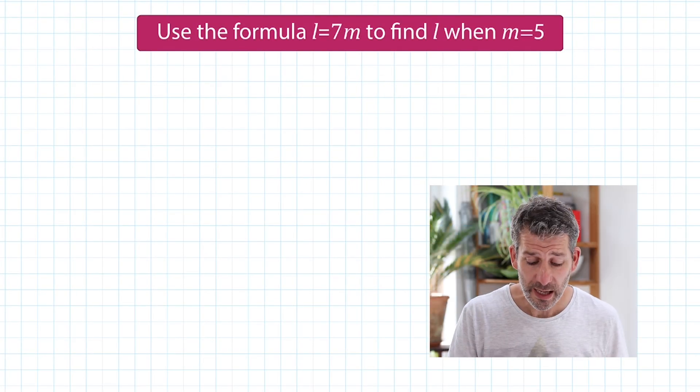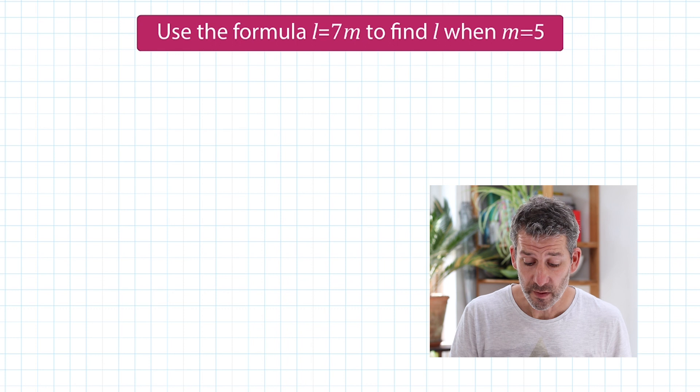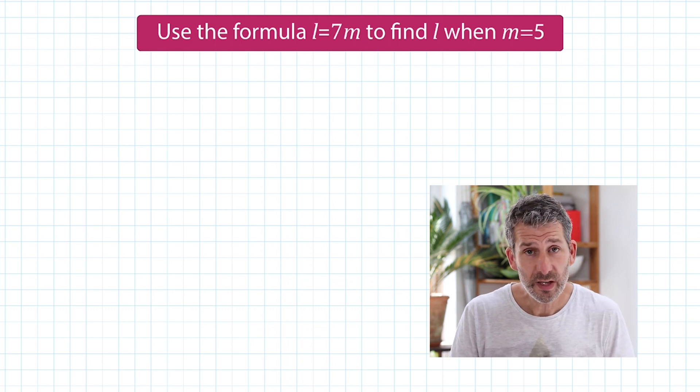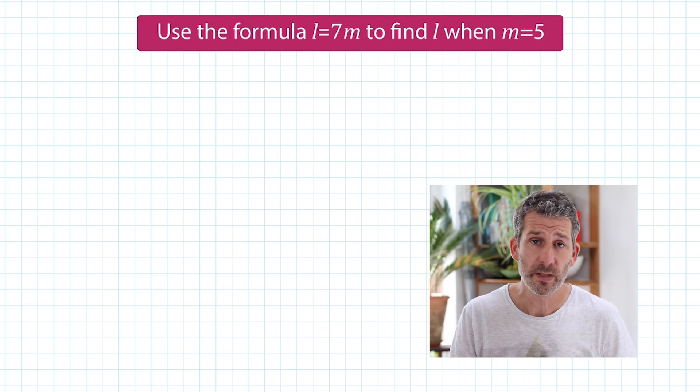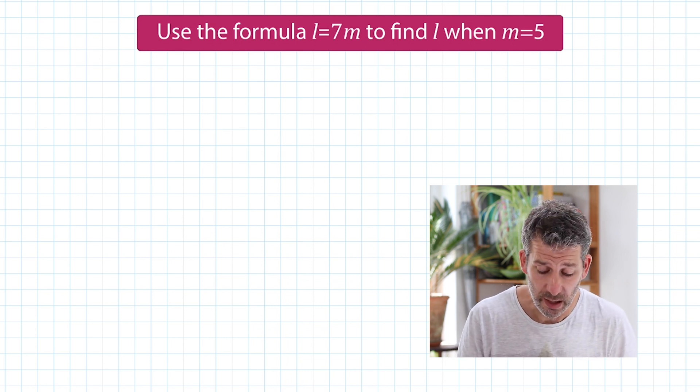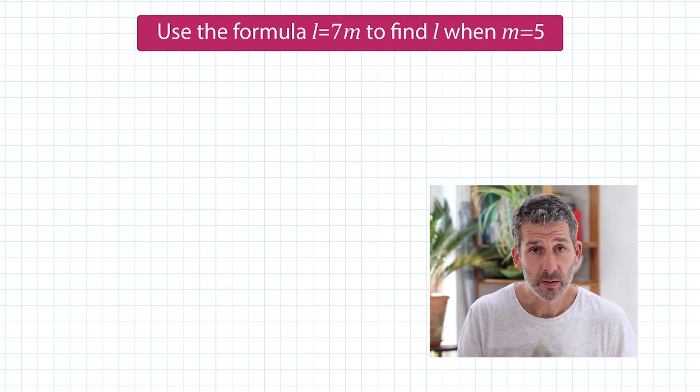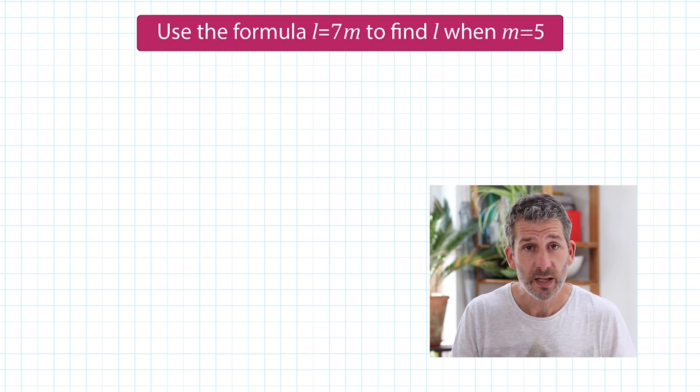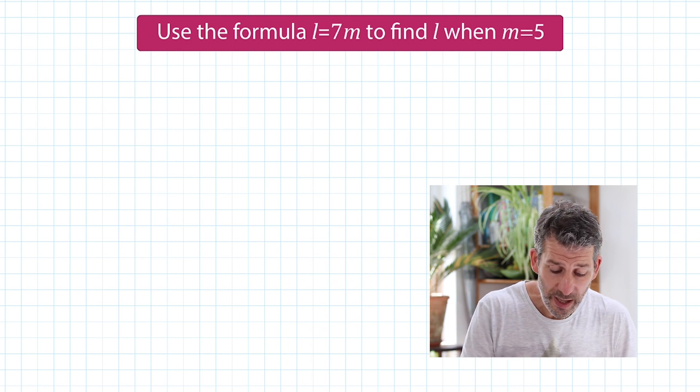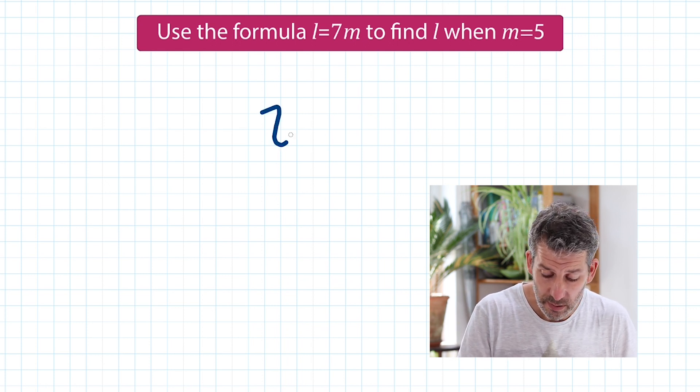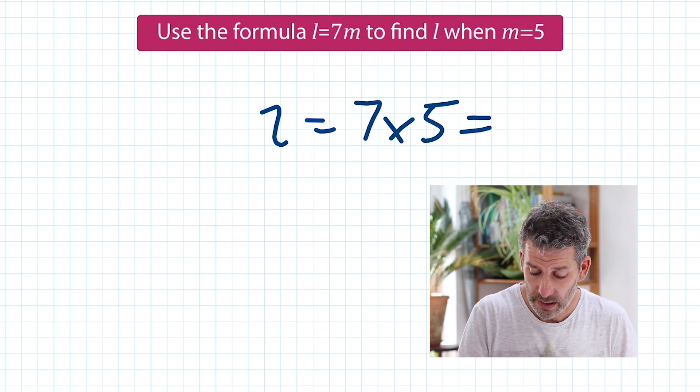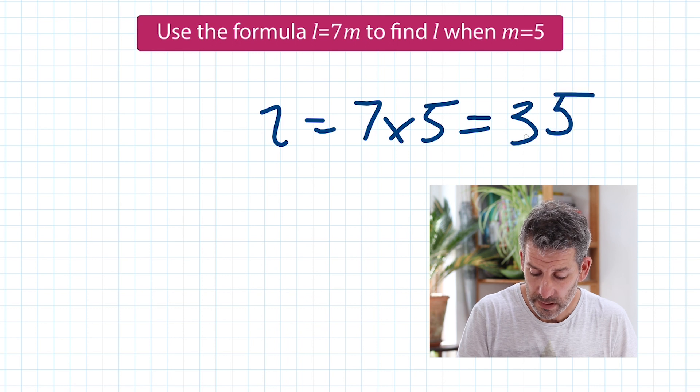Use the formula L equals 7M to find L when M equals 5. So 7M just means 7 multiplied by M, 7 times M. So to find L, we do 7 times whatever M is. And it tells us in the question that M is equal to 5. So L is going to be equal to 7 times 5 because M is 5 and that's 35. That's it.